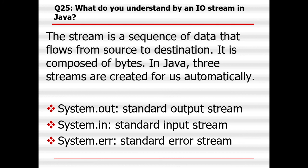What do you understand by an I/O stream in Java? A stream is a sequence of data that flows from source to destination. In Java, there are basically three streams created automatically: System.out for standard output stream, System.in for standard input stream, and System.error for the standard error stream. That is all 25 questions for today's session.